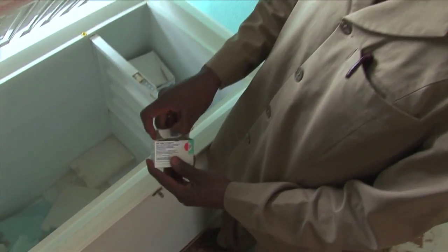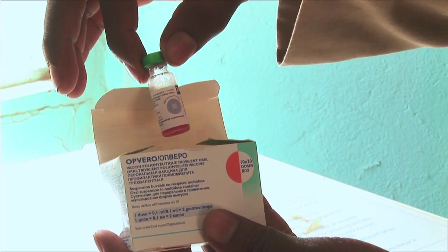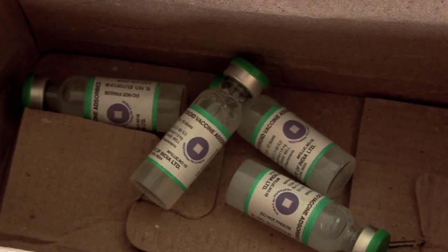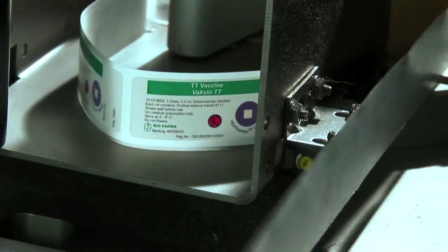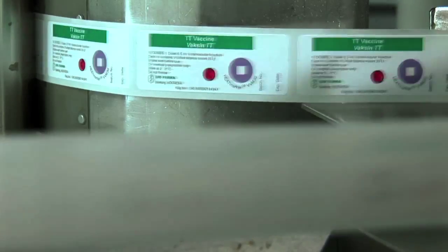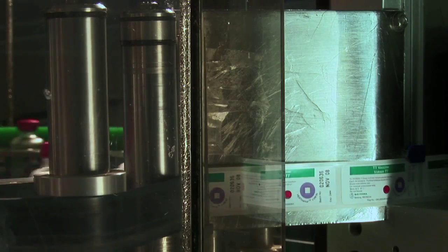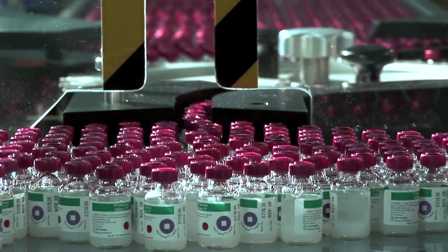It indicates to health workers whether the cumulative heat history of the product has exceeded a preset limit. The VVM is a label placed on the vial. You can easily recognize it.